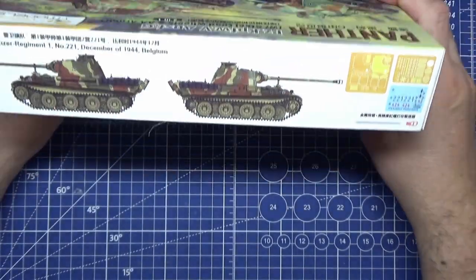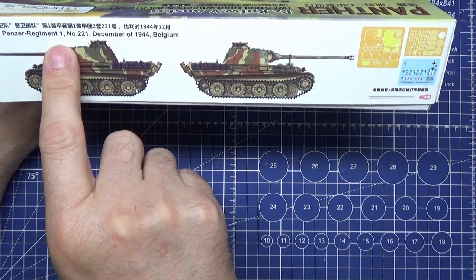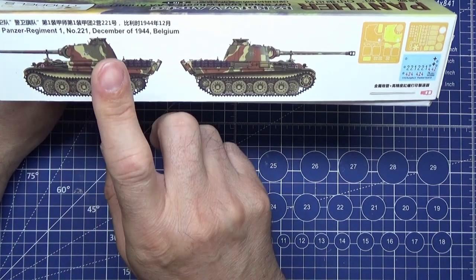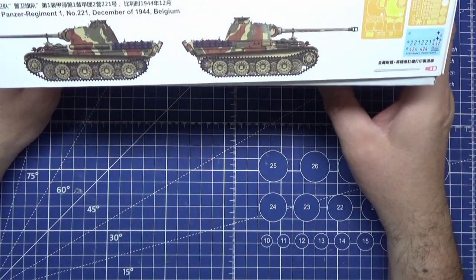The second scheme is SS Panzer Regiment number 221 from December 1944 in Belgium.